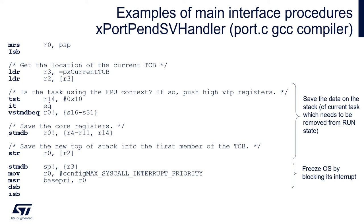If the FPU was used, the scheduler needs to store FPU registers S16 to S31 on the current task stack. If the FPU was not used, it skips this step. Then the scheduler saves core registers of the current task - R4 to R11 and R14 - and saves the new top of the stack as the current top of the stack in the TCB of the current task, which is now in the ready state. Then the beginning of the current task TCB is stored in the main stack pointer register, as the MCU is in interrupt mode executing operations of the core.